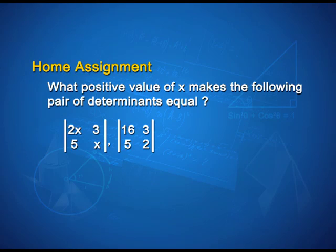Now, home assignment for you students — take down the question. What positive value of x makes the following pair of determinants equal? |2x, 3; 5, x| and |16, 3; 5, 2|. Today we learnt about singular matrix, non-singular matrix, and how to solve systems of linear equations by matrix method. Thank you.